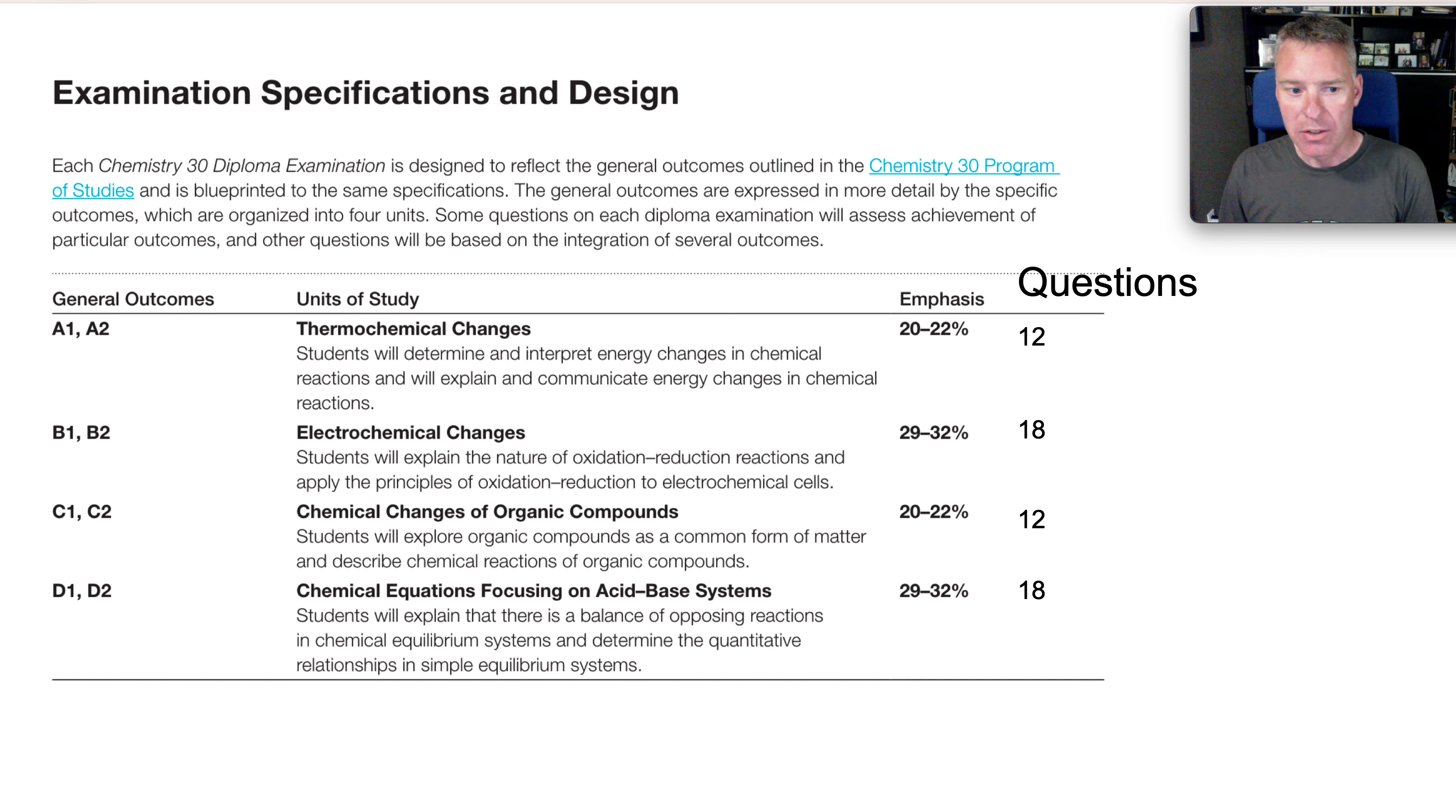But this certainly should affect your studying. Redox should certainly be quite important. And then probably Thermo even though it's not weighted as much. It's certainly one of the units that requires more effort. Equilibrium is hopefully a unit that you will do well on and it's 18 percent. Organic is something you'll probably put less time studying in. It's a simpler unit and just has much less worth, about 20 percent of your diploma exam.